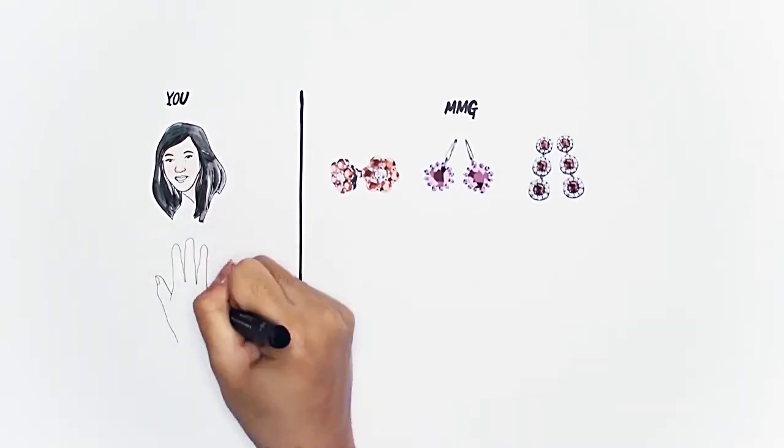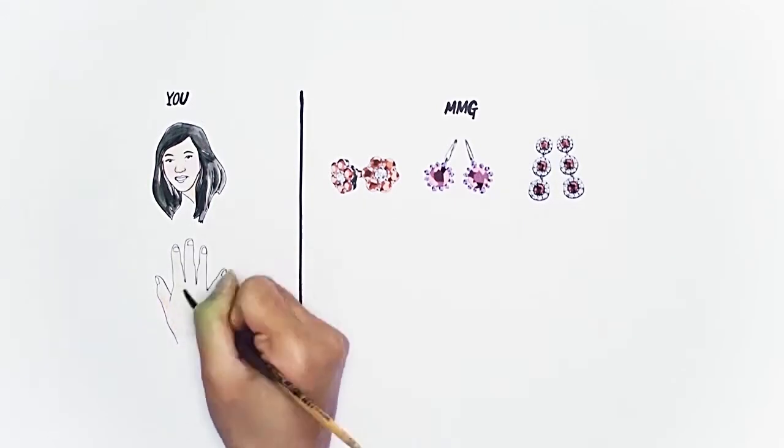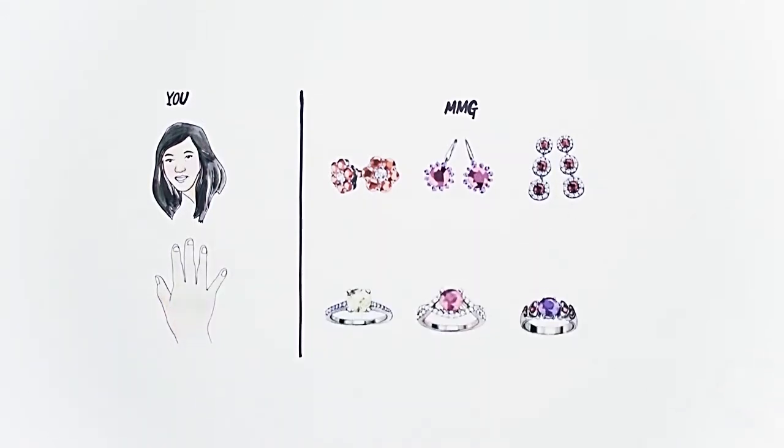Suppose you have an average figure and a yellowish skin tone. We'll help you find a piece that makes your hand or neck appear more slender and naturally matches the color of your skin.